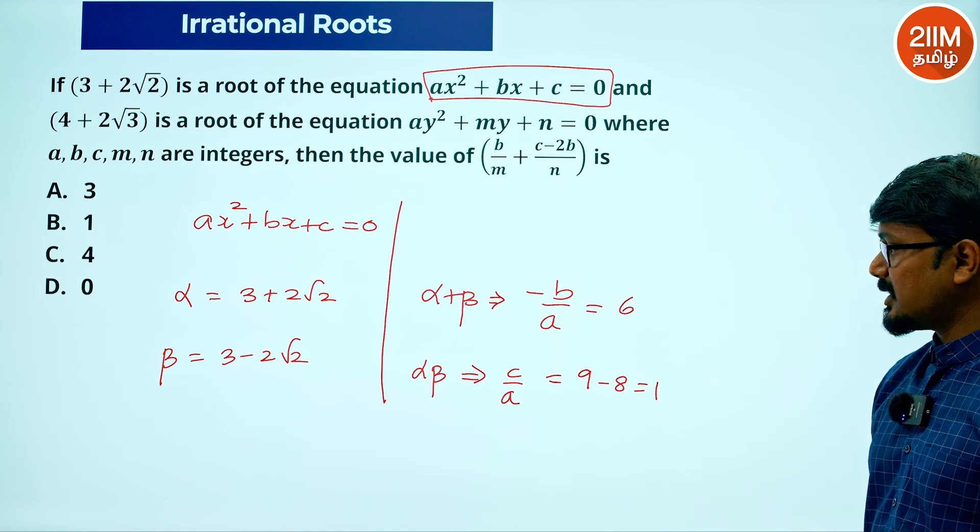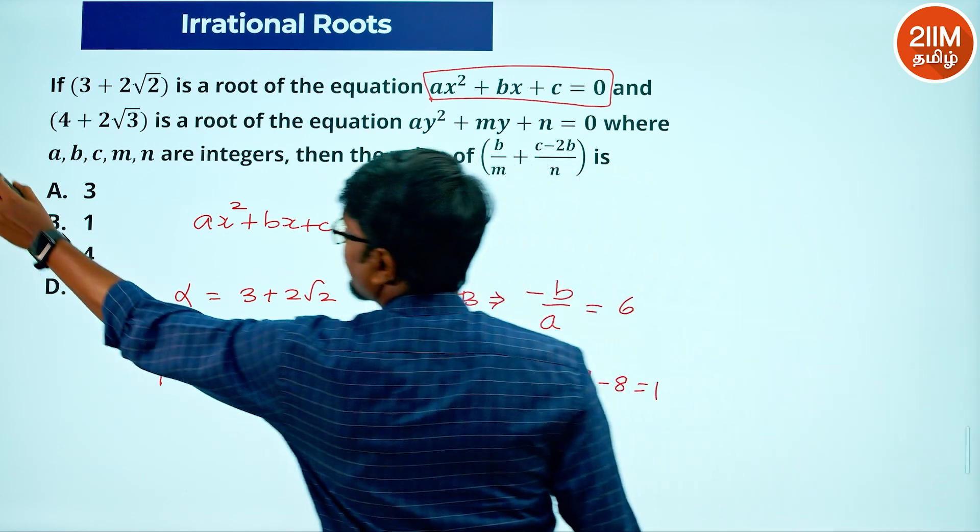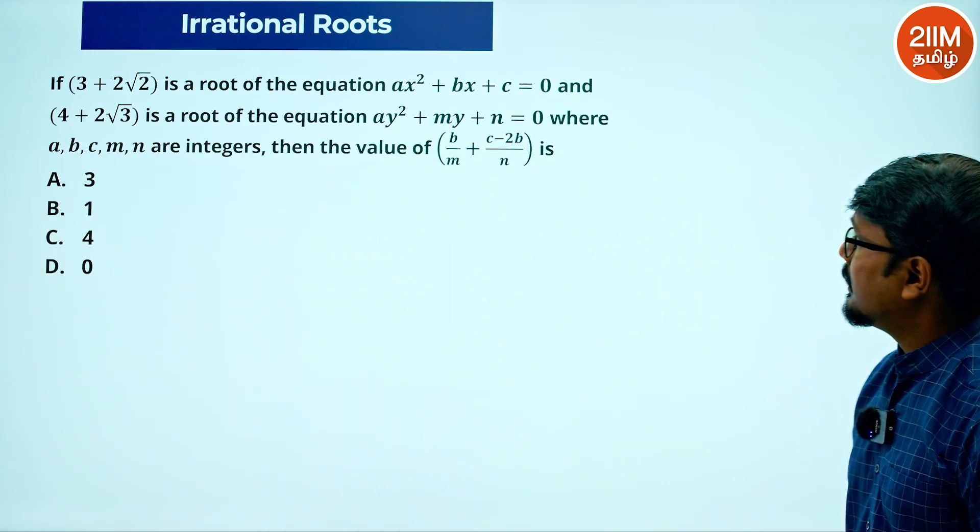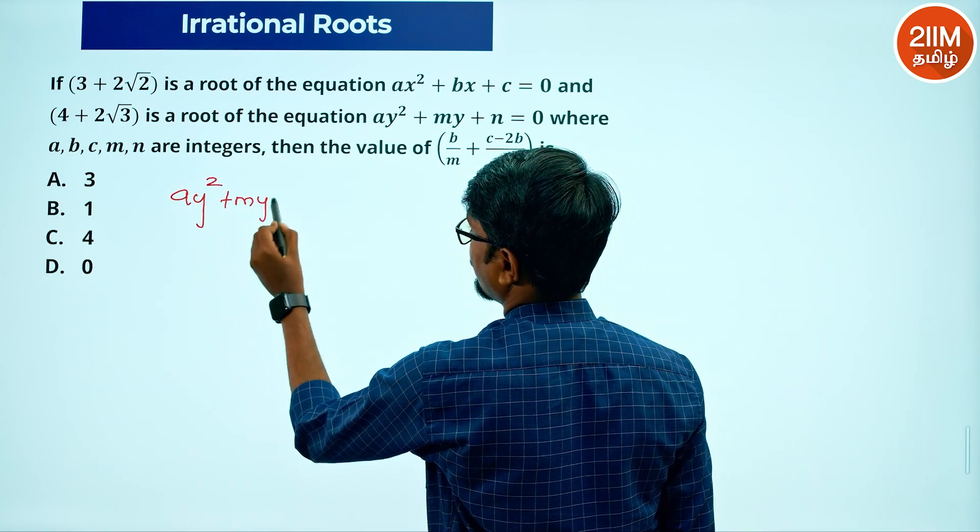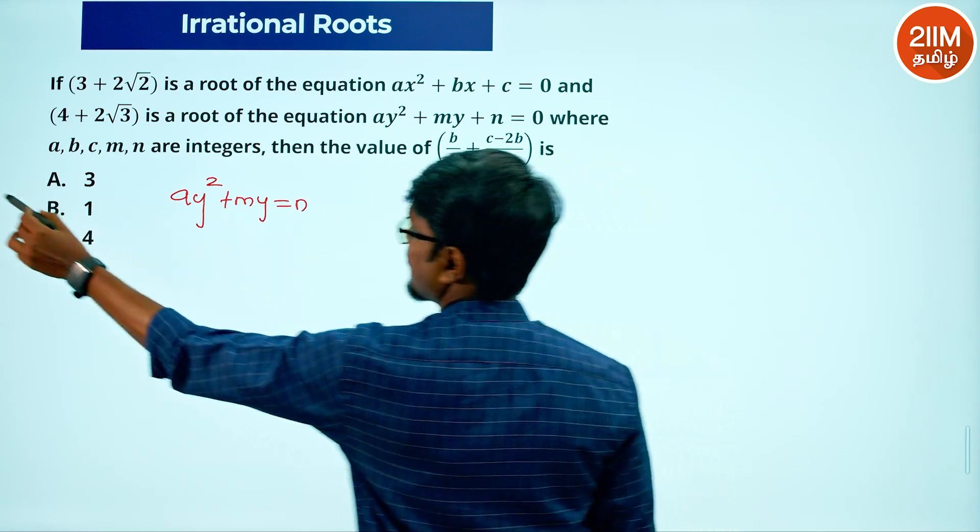So minus b by a and c by a. Next, for the equation ay squared plus my plus n equals 0.